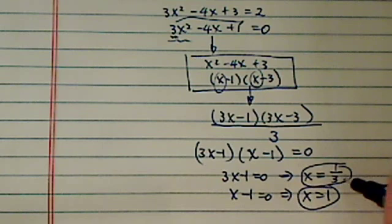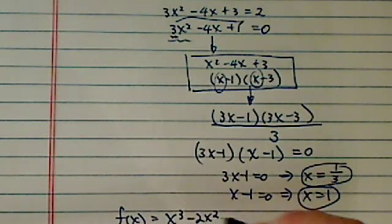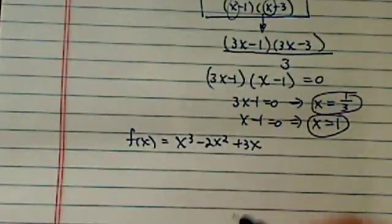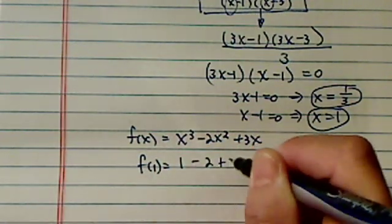Okay, once I find those two values for x, what I can do is go back and substitute back into the original function, x cubed minus 2x squared plus 3x. So what you do is evaluate, so f(1) is equal to 1 minus 2 plus 3.